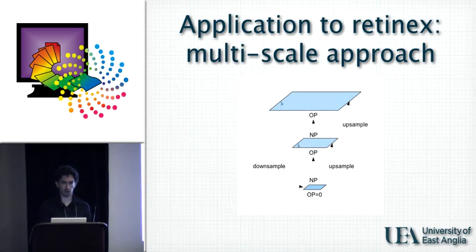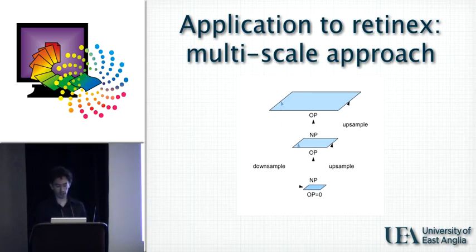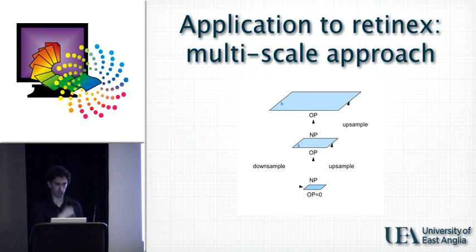In the application to retinex we propose a multiscale approach to reduce the parameter k and avoid it being too large. We start with a thumbnail of the image, apply retinex to that, increase the dimension, use that as an initial estimate, and proceed this way up to the full-size image.